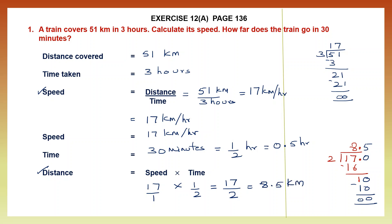What is very important here is the units. If you're talking about distance it should be either kilometers or meters. If you're talking about time it's hours or minutes, and if it is speed, speed is kilometers per hour depending on the question. So here we found the speed 17 kilometers per hour and the distance 8.5 kilometers.